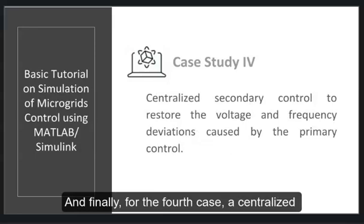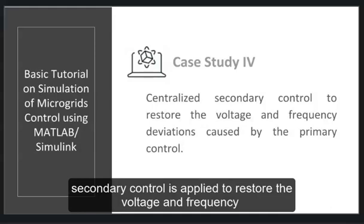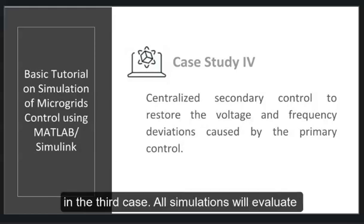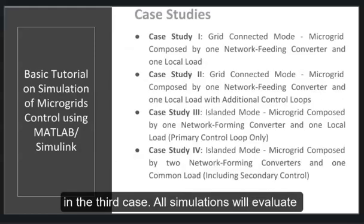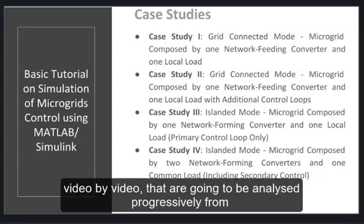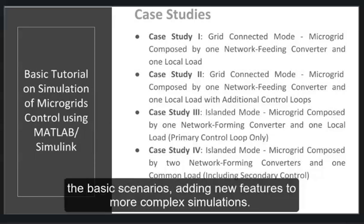Finally, for the fourth case, a centralized secondary control is applied to restore the voltage and frequency deviations caused by the droop-based primary control implemented in the third case. All simulations will evaluate different operational scenarios, and each case will be covered video by video, analyzed progressively from basic scenarios adding new features to more complex simulations.